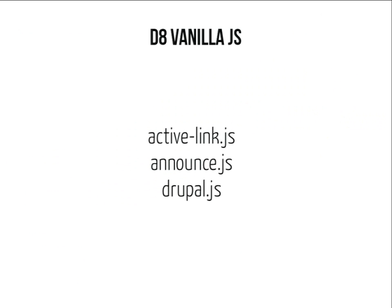So Drupal 8 vanilla JavaScript — we have three scripts that actually do something useful and do not rely on jQuery. The first one is Active Link. This script is used to highlight links that link to the current page — lots of selectors and adding a class to links. Fairly easy, no need for jQuery. We have announce.js, which is an API to allow screen readers to read something you want them to read — again no use for jQuery. And Drupal.js, which is just helper methods for translation, sanitizing, and a few other things that really don't need jQuery to work.